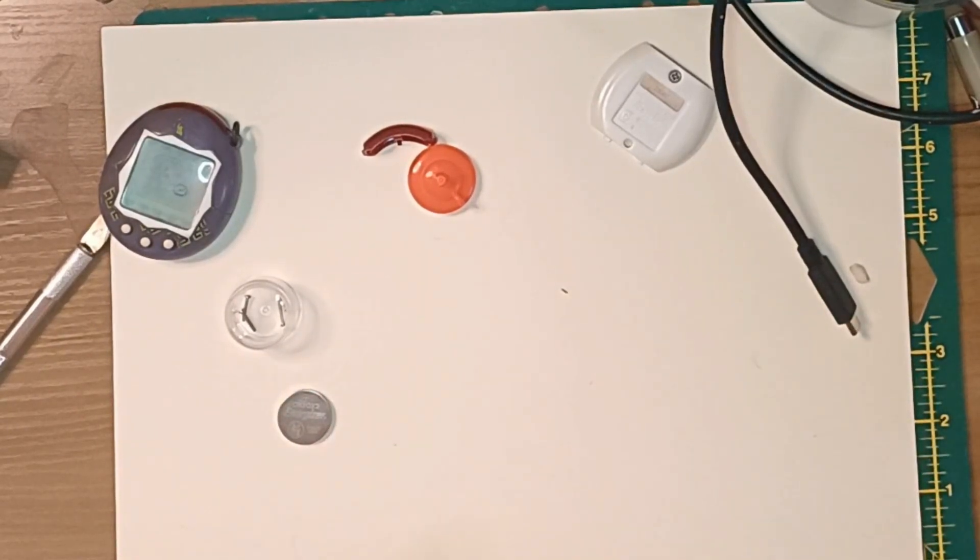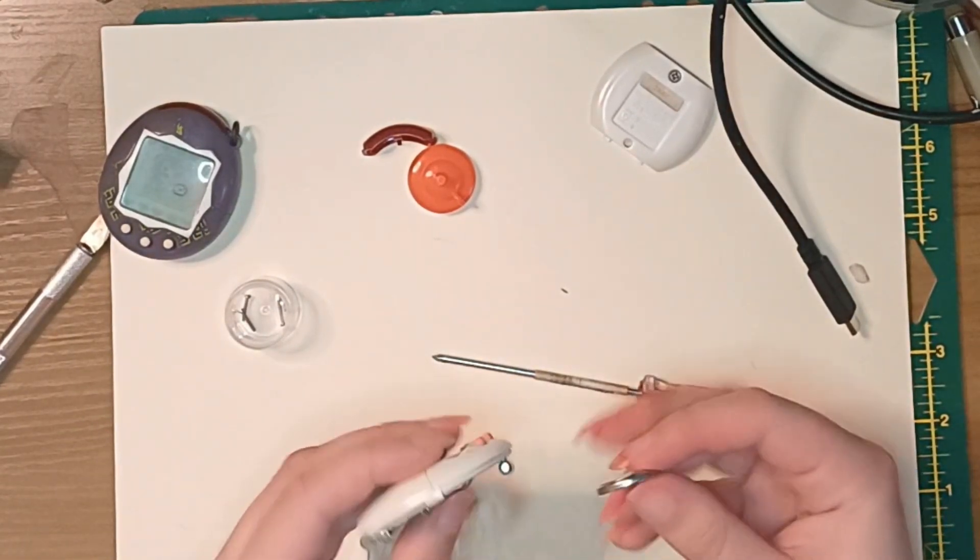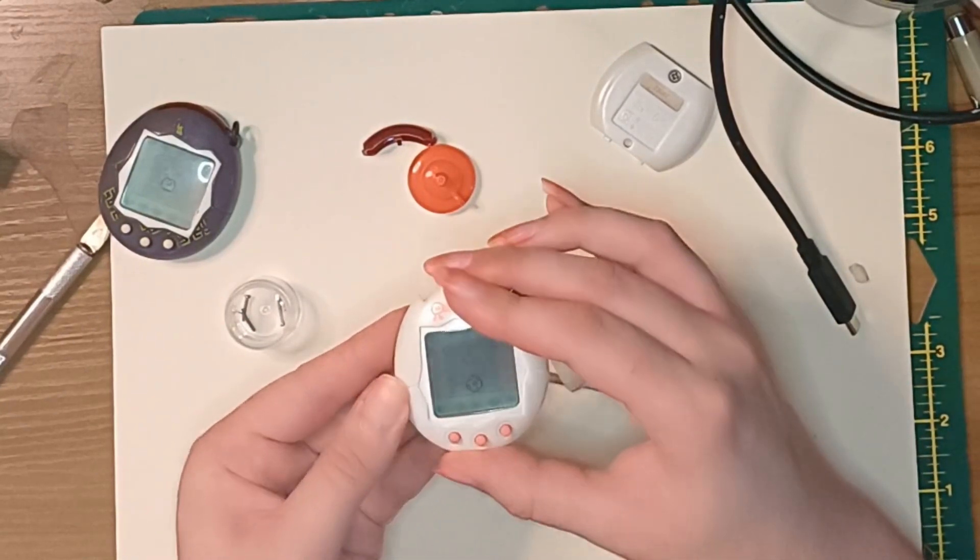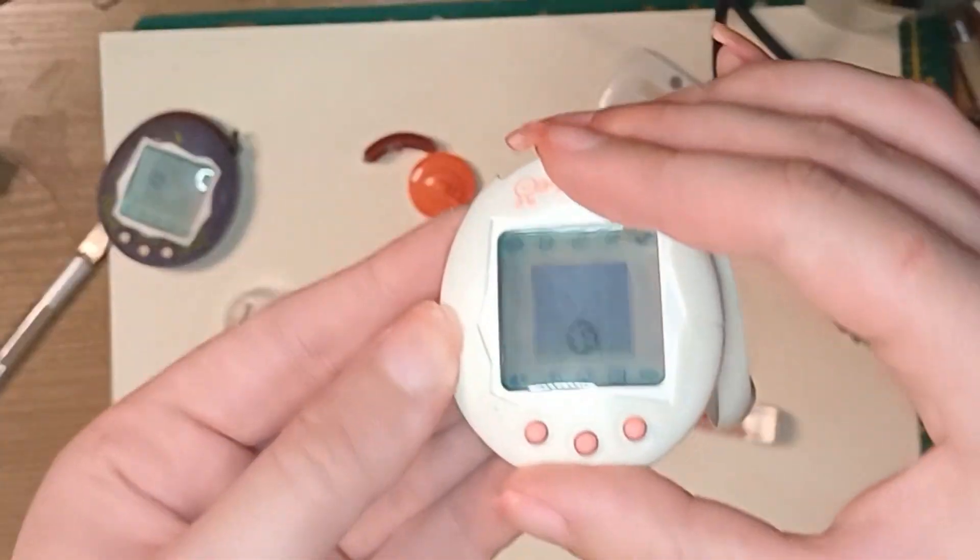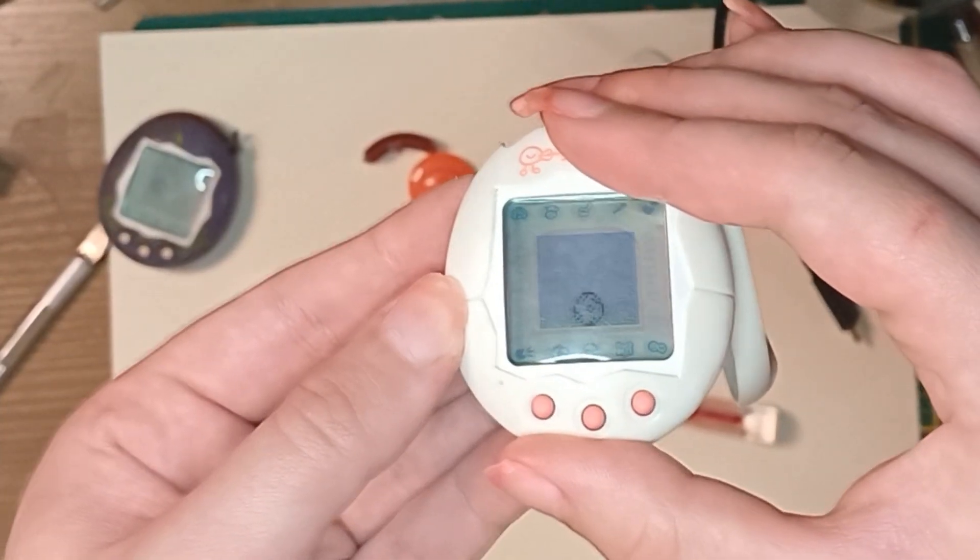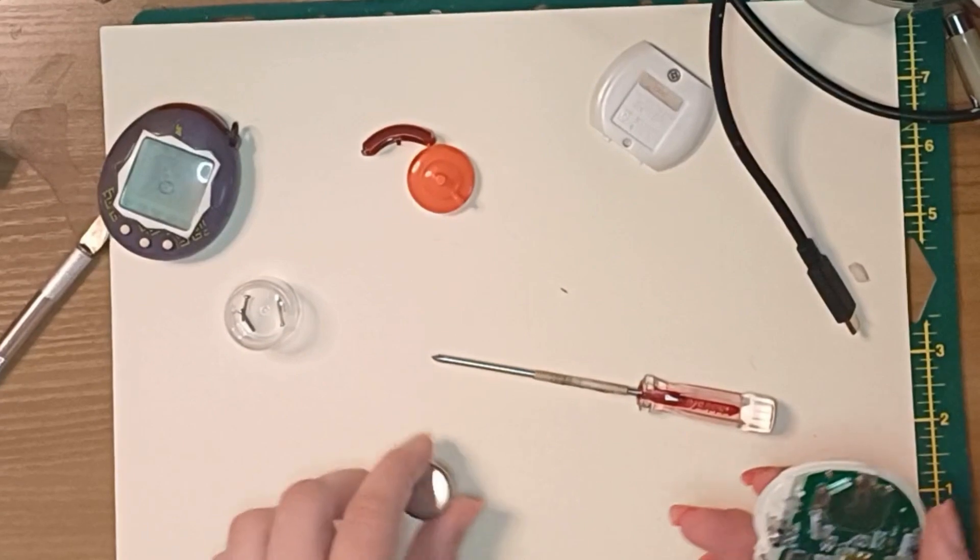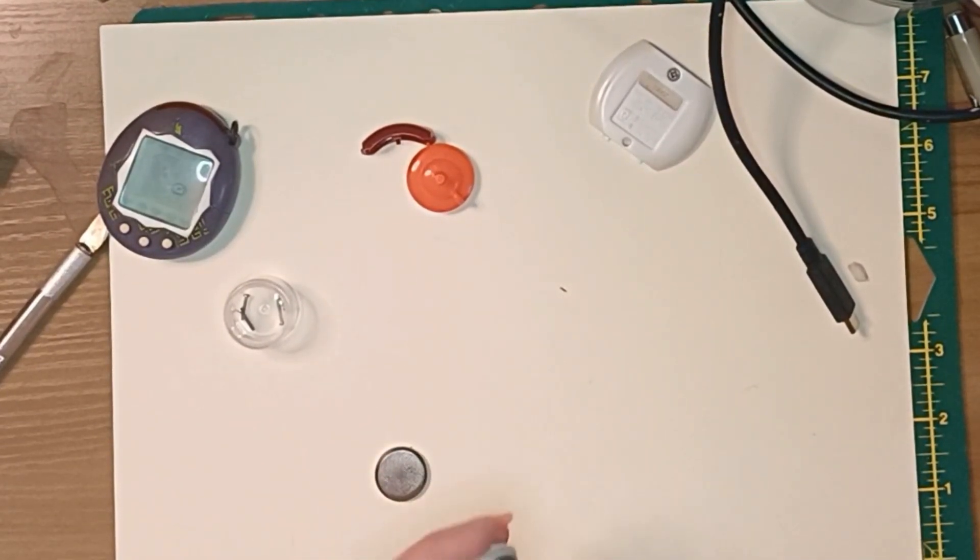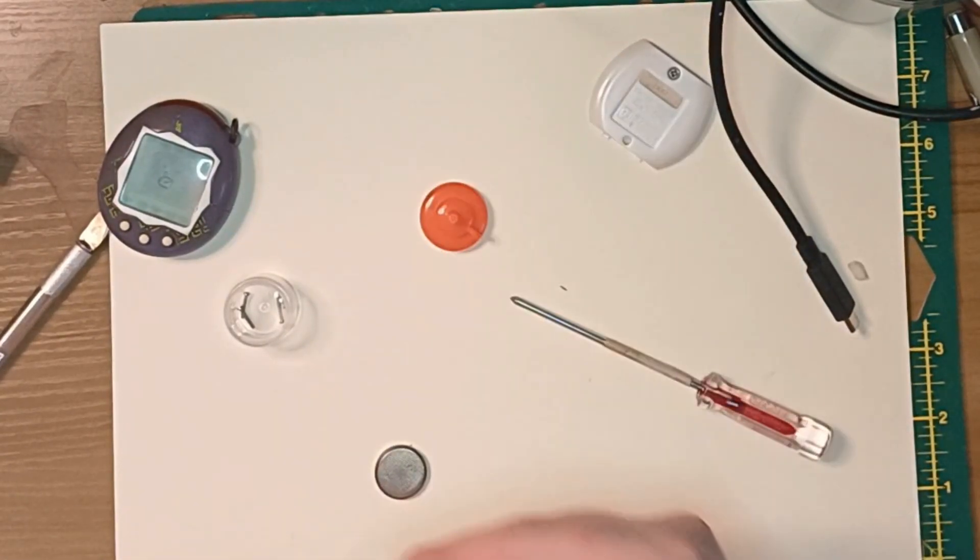So that bottom corner here, is that one just not in tight enough? Yeah, it really was just not in tight enough. You can see now that it is fine. So obviously when you're piecing your Tamagotchi back together, make sure to put the screws in tight enough. Otherwise you will have issues.